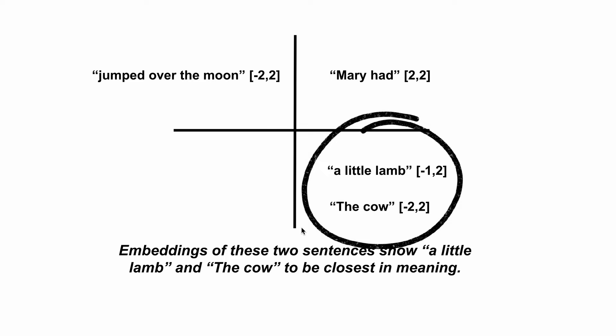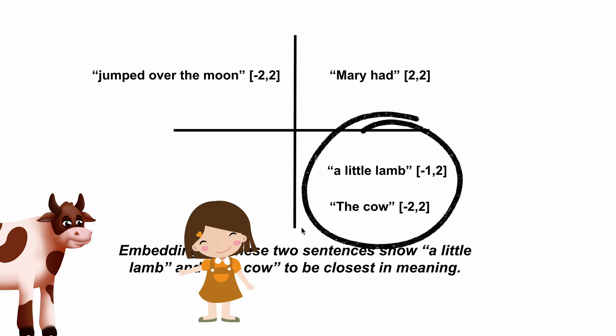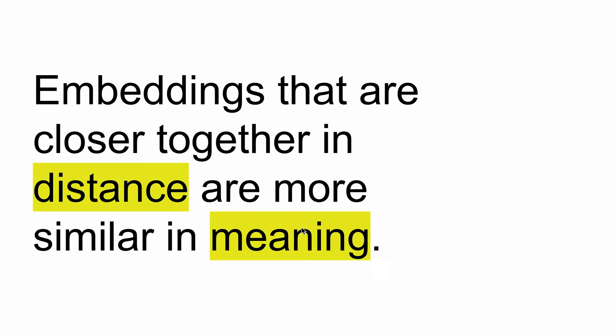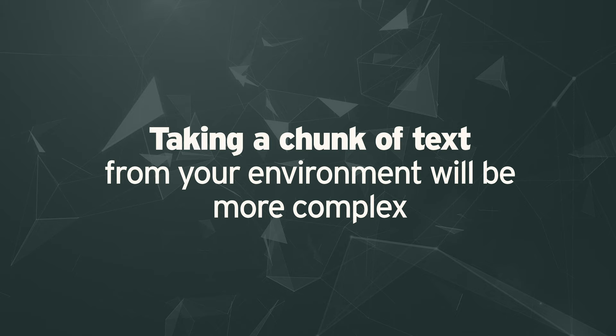You could imagine a more complex story where Mary is the name of the cow — in that instance, perhaps 'Mary' and 'the cow' would be closer together. That's why embeddings will vary based on the content and the context in which they're operating, and why it is so powerful. Anytime you're using embeddings, closer in distance means closer in meaning. In reality, taking a chunk of text from your environment — maybe from an email, a document, or a PDF — is going to be much longer and the embeddings are going to be a lot more complex.